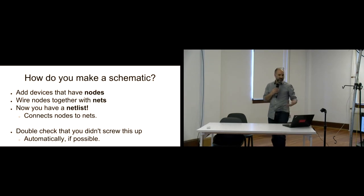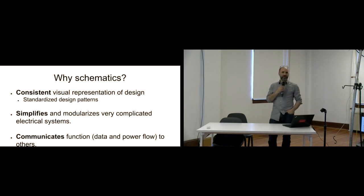So how do you make a schematic? You add devices that have nodes. You wire the nodes together with nets. And now you have a net list. And if we were machines, we would be done. And why do we not just do that? Well, because that's dumb. We are visual processors. We are the best biologically inspired neural networks we have right now. We use schematics to simplify and to communicate function that we could not in text.